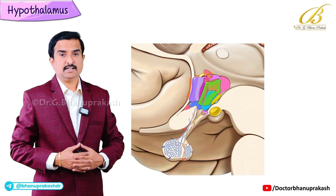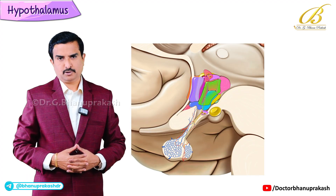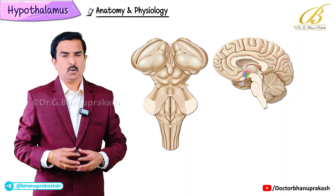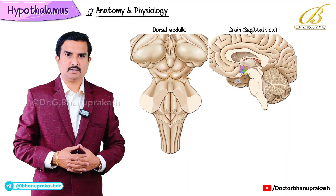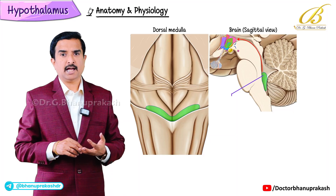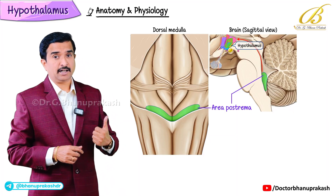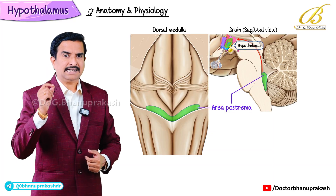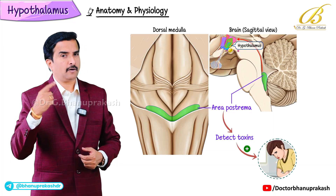Hello everyone. In this video we are going to discuss about the hypothalamus. The hypothalamus receives vital sensory information including input from the area postrema, which is located in the dorsal medulla, which helps detect toxins and trigger vomiting.